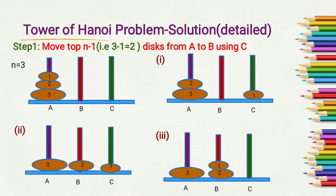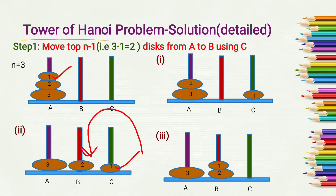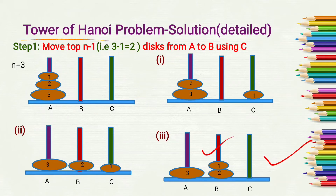Step one says we have to move the top n minus one disks. Here n is 3, so 3 minus 1 equals 2 — we have to move these two disks from A to B using C. First, move the top disk from A to C, then move disk 2 from A to B, then move disk 1 from rod C to rod B. We have performed step one: rod B now contains disks 1 and 2, and rod A contains the third disk.